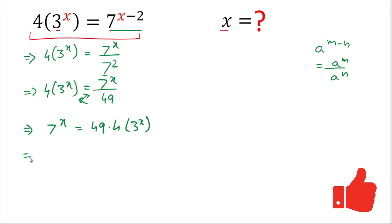Here we can write 7 to the power x equals 49 times 4 is 196, and 3 to the power x. Now we'll take this 3 to the power x to the denominator.